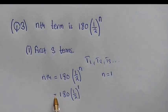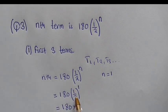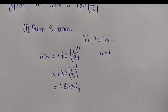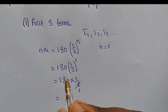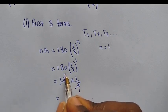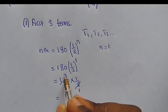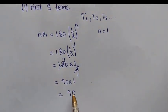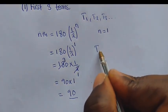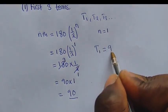So from here, we are going to say 180 times (1/2) to the power 1. What I have done is, where there is n, I have replaced it with 1 because we want to find the first term, T1. So from here, we get 180 times 1/2. So 2 into 180 is 90. So we have 90 times 1, which gives us 90. This tells us that term 1 is equal to 90.